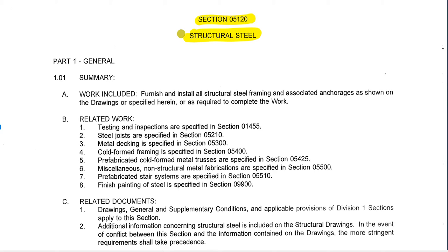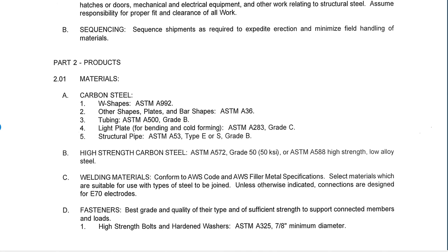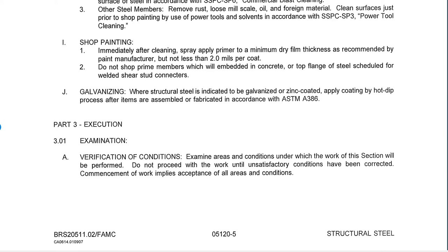Specifications are usually divided into three parts using the standard. Part one covers general conditions specifically for this scope of work. Part two is going to give us the products — the specific information about what is included. And then part three is execution, which gives information on how the work should be done.